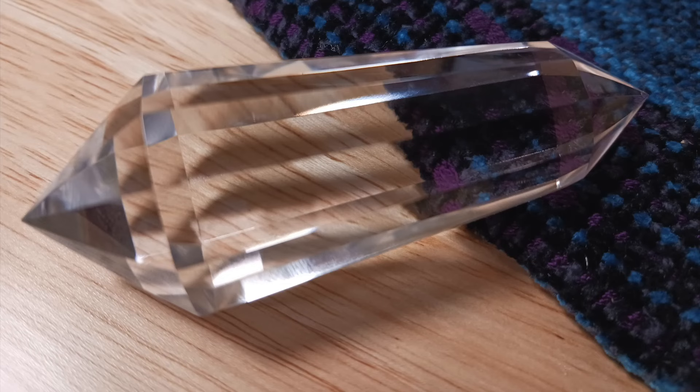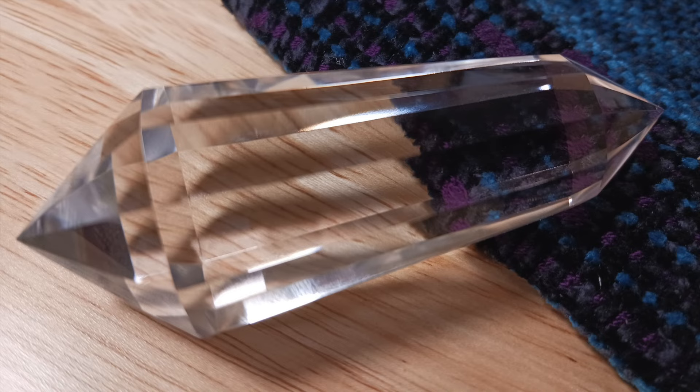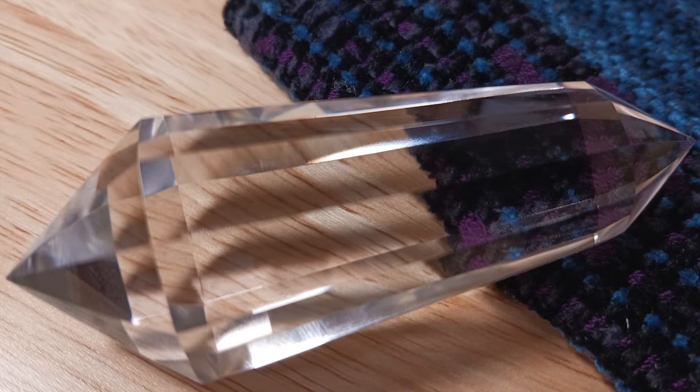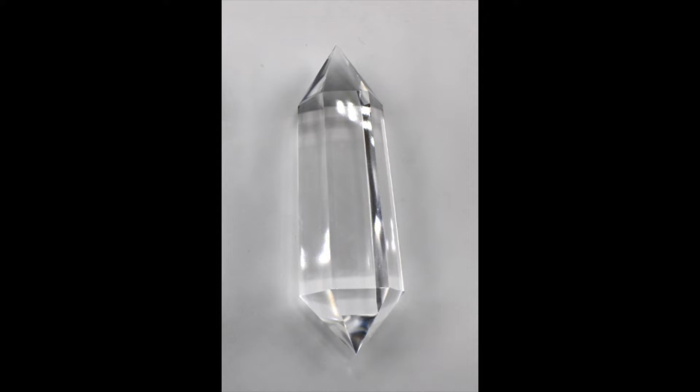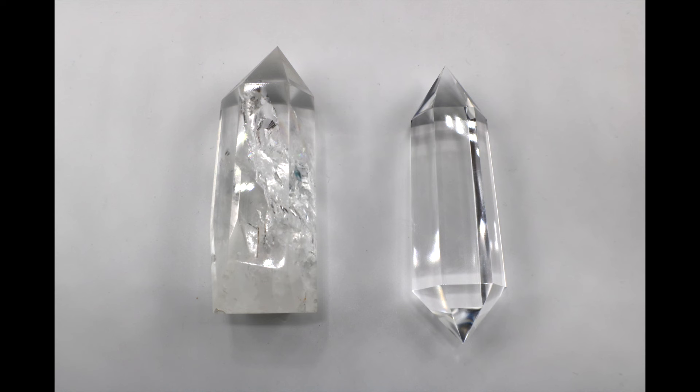To be a Vogel crystal, Marcel outlined some important and precise characteristics that were paramount in creating these high precision amplifiers. Number one, the crystal must be double terminated, which simply put means it must be pointed at both ends. Here is a picture of a single terminated crystal, pictured on the left, and a double terminated Vogel crystal on the right.